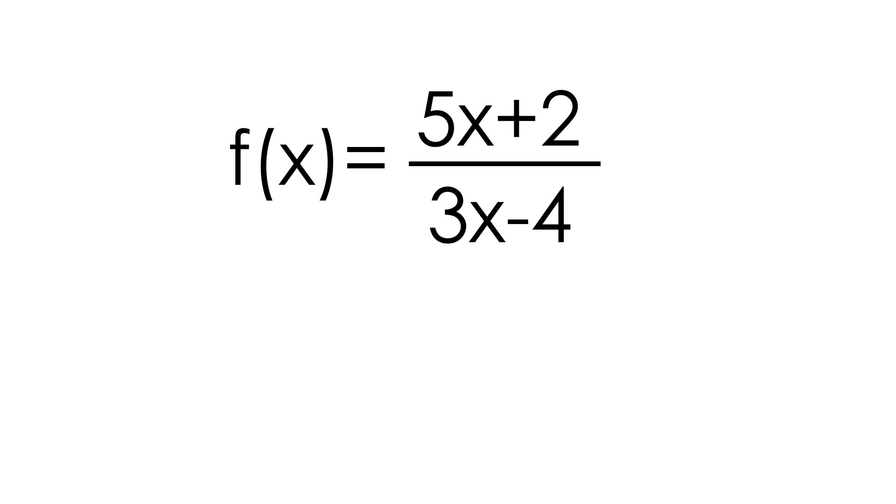So what I like to do to make this as easy as possible is to label the top part of our function, which is 5x plus 2, I'm going to label this the high, and I'm going to label the bottom part of our function, which is 3x minus 4, I'm going to label this as the low.